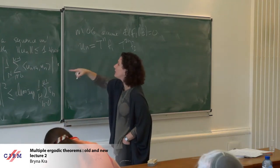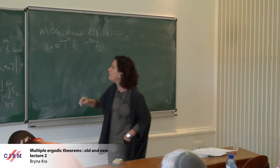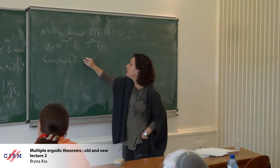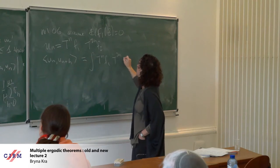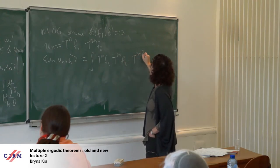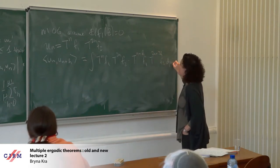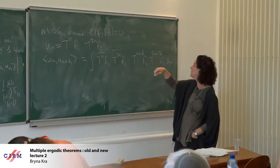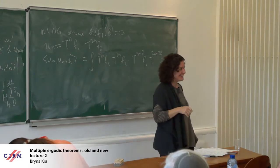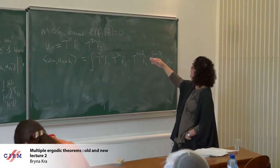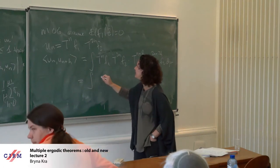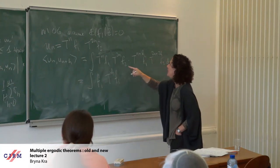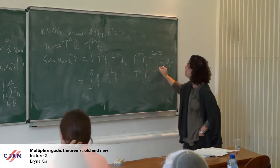I need to look at gamma_h defined by the inner product u_n with u_{n+h}. When I write this out, I get T^n f1 times T^{2n} f2 times T^{n+h} f1 times T^{2n+2h} f2 — I should put some conjugate bars somewhere to make this correct. Now use the fact that it's measure-preserving and hit everything with T^{-n}: the first term becomes f1 times T^h f1, and the second term is T^n(f2 times T^{2h} f2). So the only occurrence of n is in this second term.